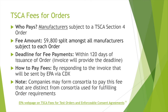Manufacturers subject to a TSCA Section 4 order are also required to pay a fee, in addition to the testing requirements provided in an order, as provided under 40 CFR Section 700.45. For each order, a $9,800 fee is split amongst all manufacturers subject to each order. The deadline for fee payments is within 120 days of issuance of an order, and the invoice for the order will provide this deadline. Fees can be paid by responding to the invoice that will be sent by EPA via CDX. Note that companies may form consortia to pay this fee, and this fee consortia may be distinct from consortia used for fulfilling the other requirements of the order. Further information can be found on the EPA webpage titled 'TSCA Fees for Test Orders.' This concludes the overview of TSCA Test Order Basics.